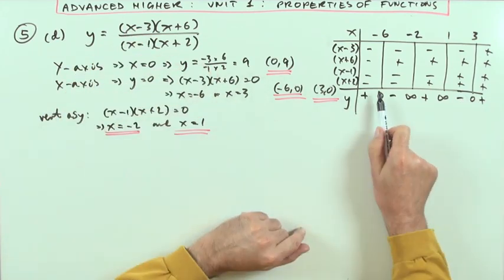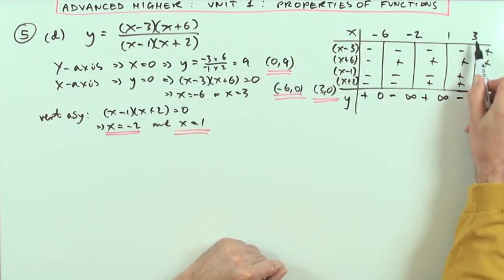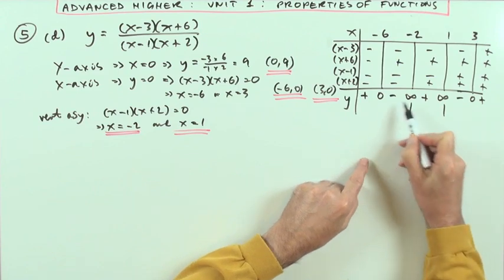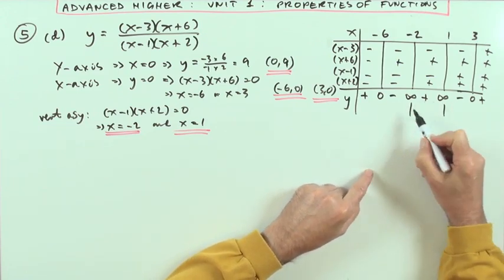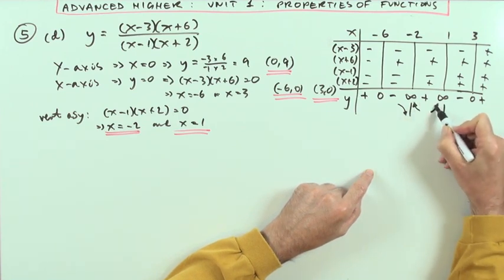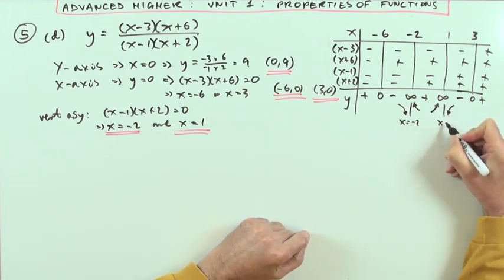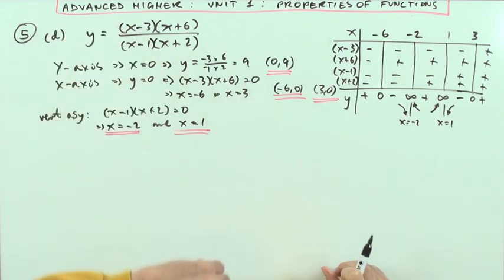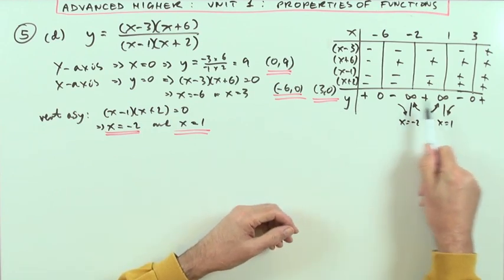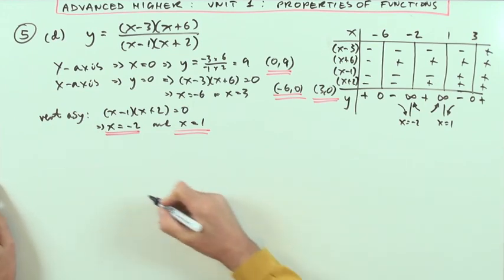This actually gives you a picture of where the graph is: crossing at negative six from below to above, crossing at three from below to above, and the two vertical asymptotes at x equals negative two and x equals one. You can see the signs on either side — on one side it's negative so the graph goes down, the other side it's positive so it goes up. Making up this table of signs when you've got a factorized expression is quite handy; you could reconstruct most of the graph from that.